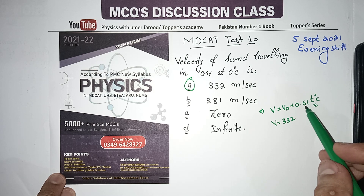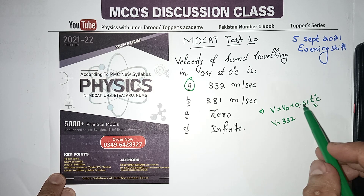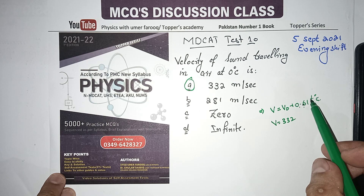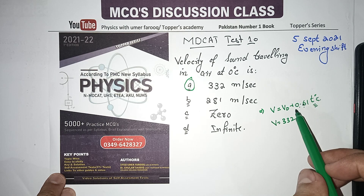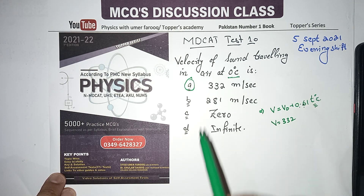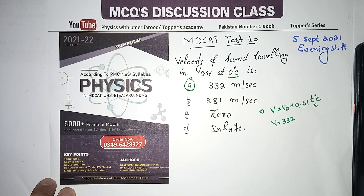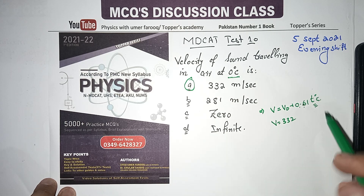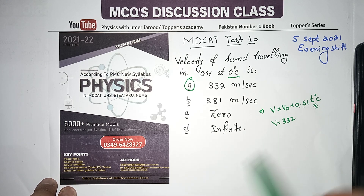As temperature rises, multiply accordingly: 1°C, 2°C, 3°C. Be careful whether the temperature is given in degrees Celsius or Kelvin — if in Kelvin, you must convert it to Celsius before applying the formula.